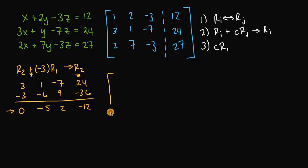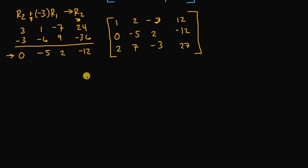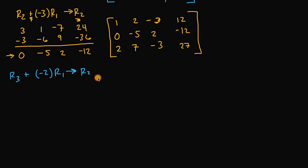I'm going to go ahead and rewrite this matrix. Now my second task is to try to get this 2 to be a 0. I can take row 3 and add to it negative 2 times row 1, and that will produce a new row 3. Because if I multiply negative 2 by this positive 1, I'll get negative 2 there, and adding negative 2 and positive 2 gives 0.